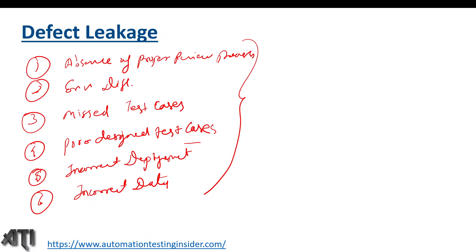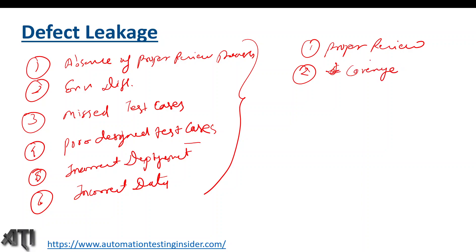Now let me talk about some prevention techniques to minimize defect leakage. The first point is we should do a proper review process — a proper review of our test cases and testing process. Another point is to design proper test cases, and the coverage of testing should be proper — we should understand the requirements well, write test cases accordingly, and aim for 100 percent requirement coverage.